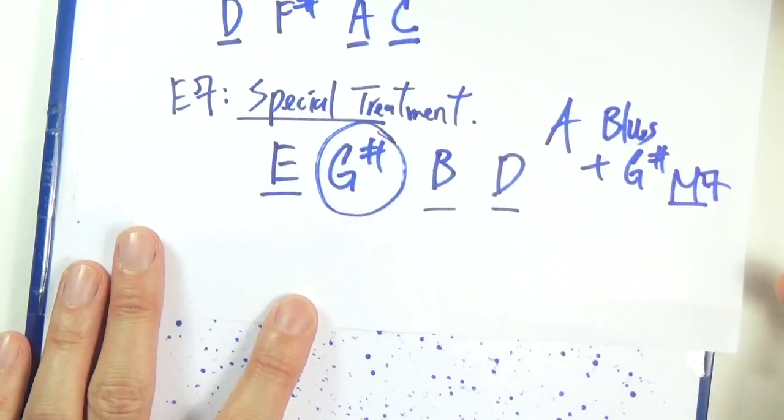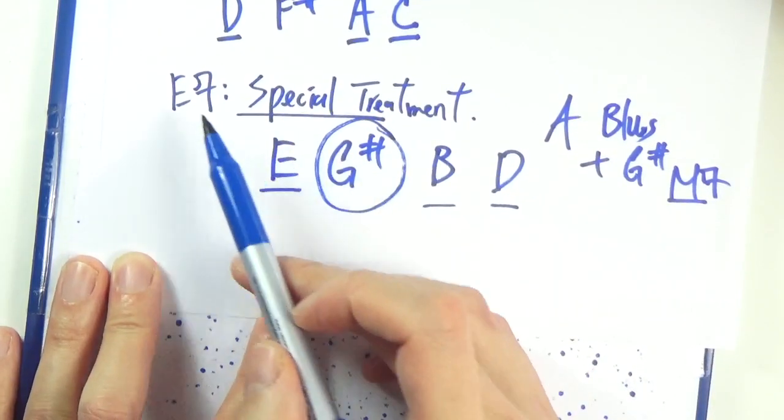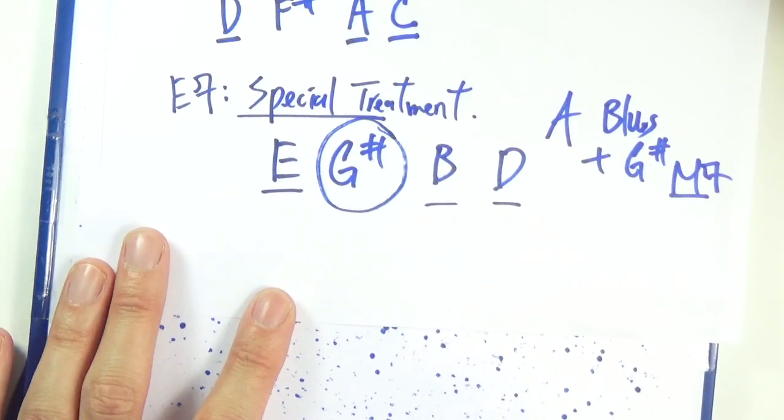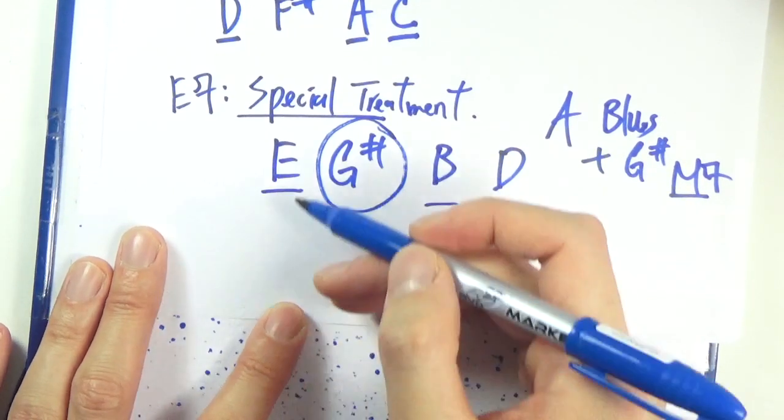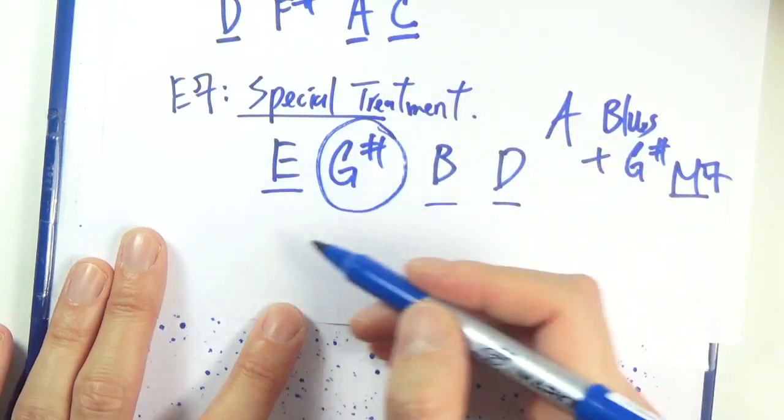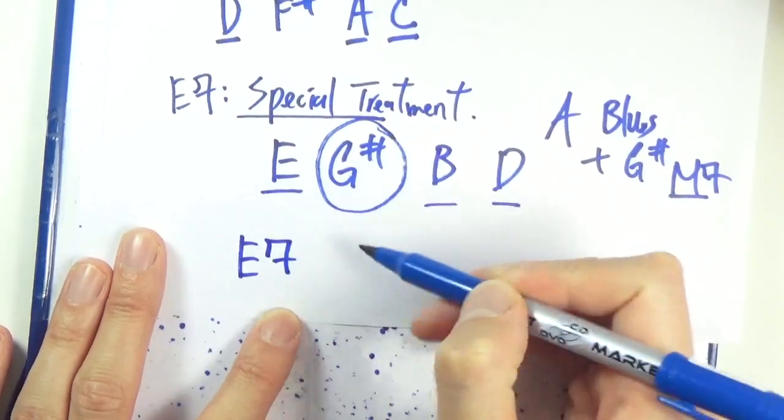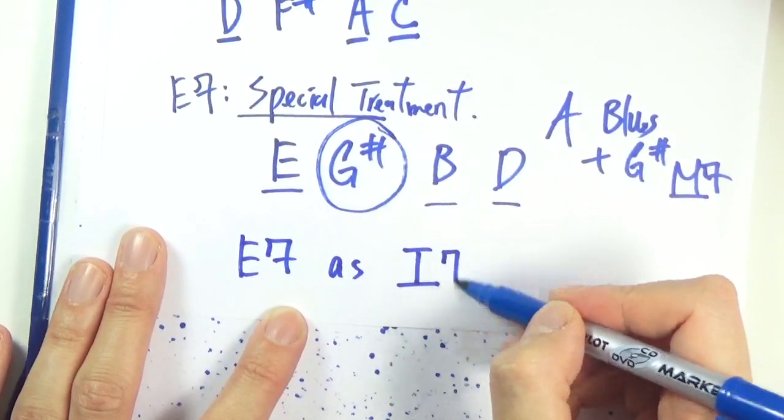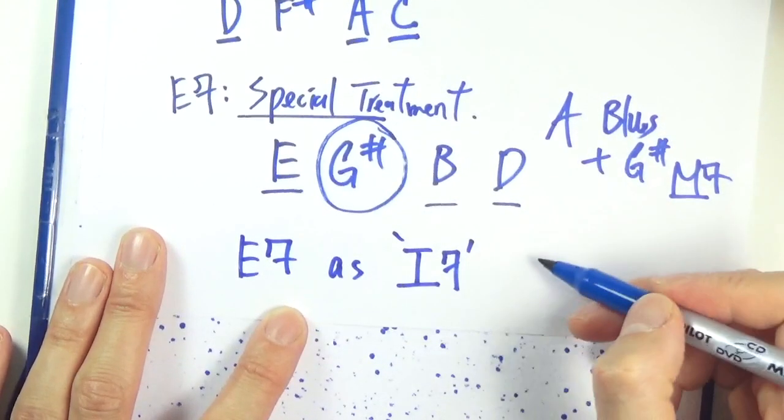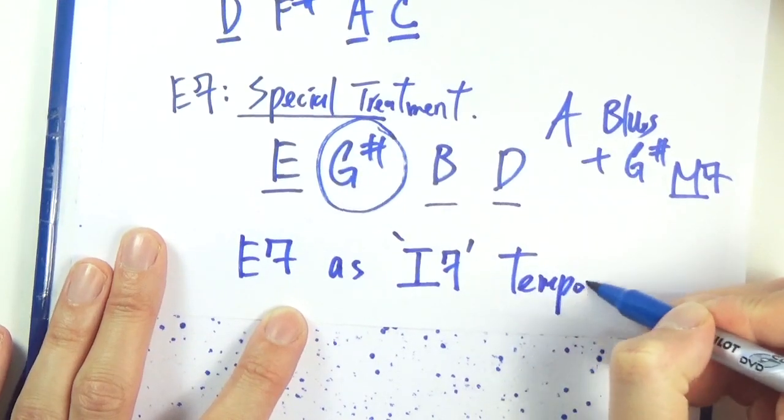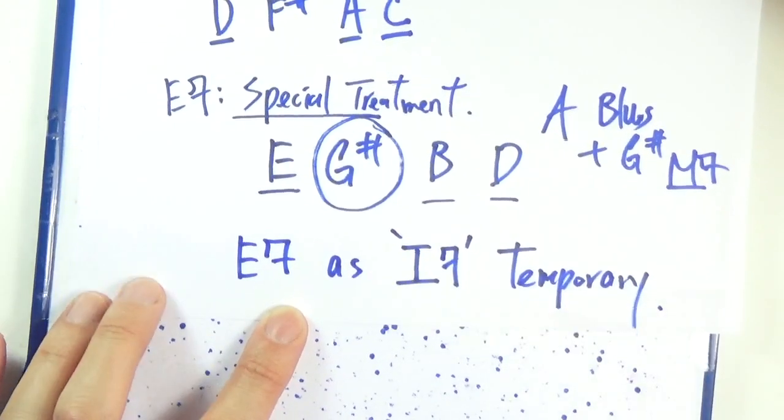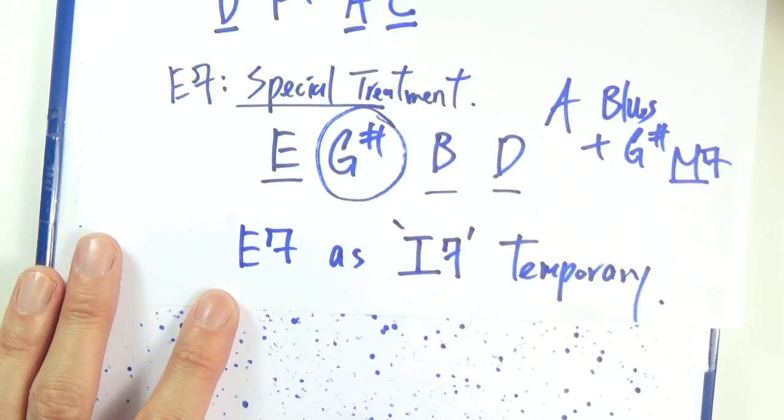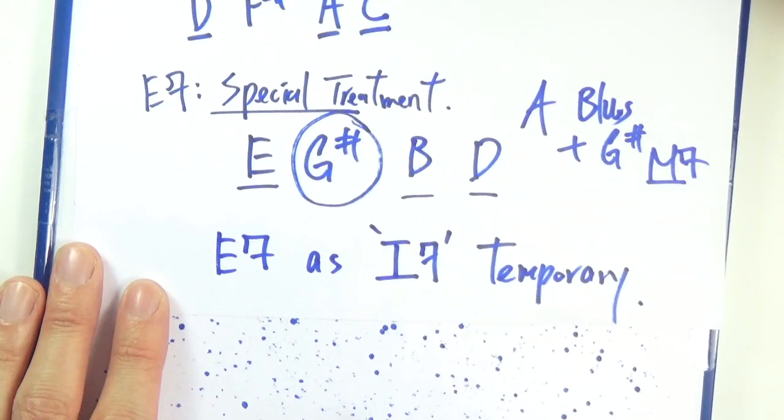Or we are going to treat E7 as a special case. And I'm going to talk about this in great details later on. But the special treatment is we think E7 as our temporary 1.7. Temporary. And that's how we are going to look at it later on.